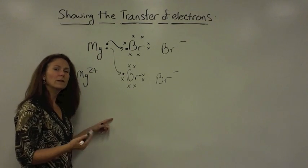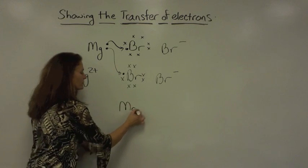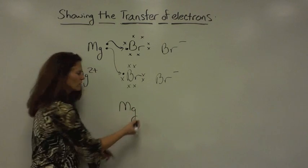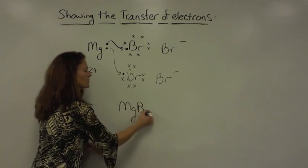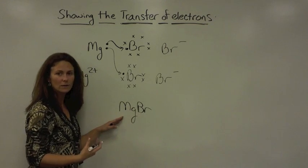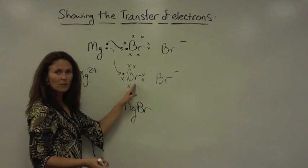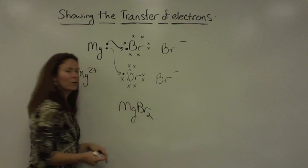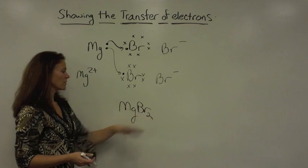And this will result in a chemical formula of Mg, subscript one, but we don't write the ones because as soon as we write the element down, it's understood to be there. And we have two atoms of bromine involved in this process, so we put a two, MgBr2.